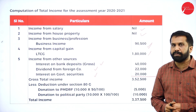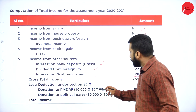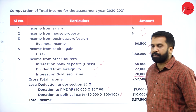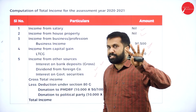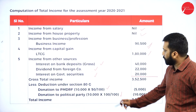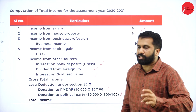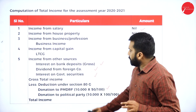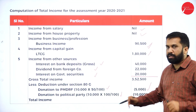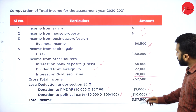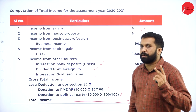Add everything — you got 3 lakh 52,500. Have you made any donations or any investment? Yes. Donation to Prime Minister Drought Relief Fund — 50%. Donation to political party — 100%. The four funds that always come under 50% donation are: Indira Gandhi, Rajiv Gandhi, Jawaharlal Nehru, and Prime Minister Drought Relief Fund. So 10,000 into 50% = 5,000. Political party — full deduction, 10,000. So 3 lakh 52,500 minus 15,000 = 3 lakh 37,500. This is called total income. Step number 2 is completed.